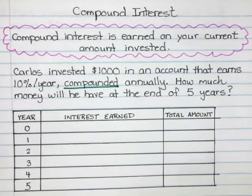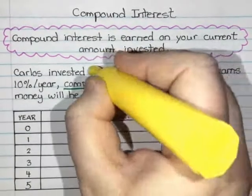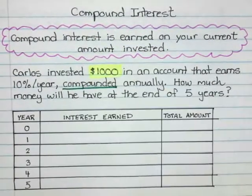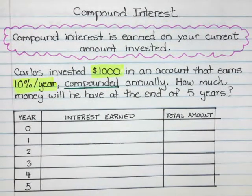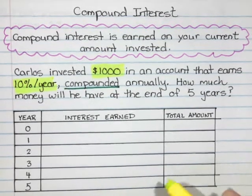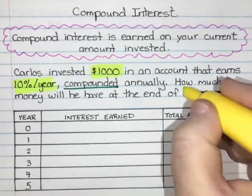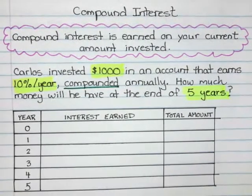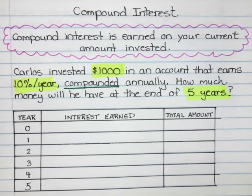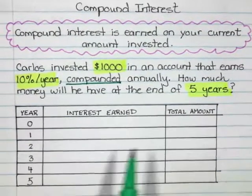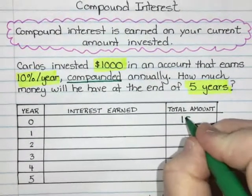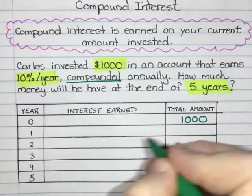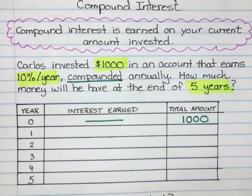I'm going to highlight the important numbers. He invested $1,000. He's getting 10% per year, which is a very unrealistic interest rate, but it works nicely for calculations. He is leaving his money for five years. So we're going to fill out a table. In year zero — the start of the investment — he goes to the bank and puts in $1,000, with no interest earned yet.